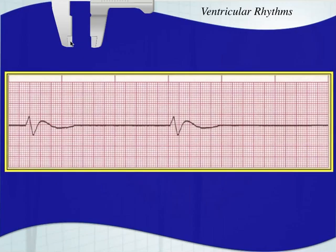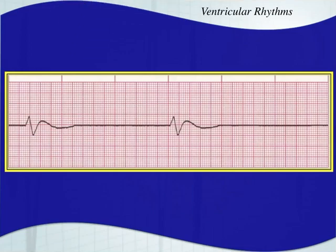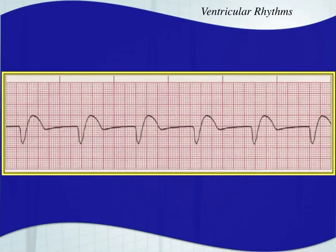Looking at the next one, this looks very slow — we have two beats on a six-second strip, so this is about 20 beats per minute. It's a wide QRS complex. We really can't identify regularity because we only have two beats to work with. But we can say: wide QRS complex, no P waves, 20 beats per minute. That fits the rules for idioventricular rhythm. You'd want to print a longer strip to confirm.